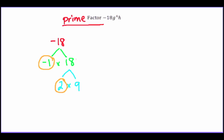Now I'm going to find two numbers that multiply together to make 9. Using a different color, that is 3 times 3. I know that 3 is also a prime number, so I'll circle both of those. So I'm done factoring the negative 18 part.